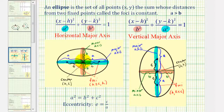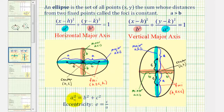Finally, the distance from the center to the foci is equal to c in both cases, and we can find c using the equation a squared equals b squared plus c squared.